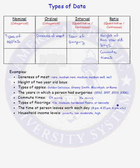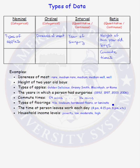Looking at the next example, types of flooring: tile, linoleum, hardwood floors, or laminate. These are labels or names of types of flooring, but there's no natural ordering to the labels. Therefore, this data type is nominal.